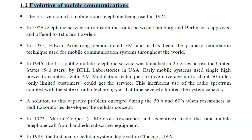The first version of mobile radio telephone was used in 1924. After two years, telephone service in trains on the route between Hamburg and Berlin was approved and afforded to first-class travelers.